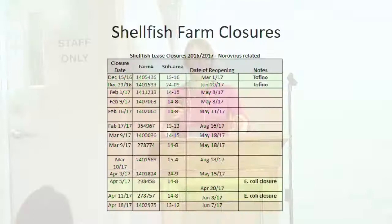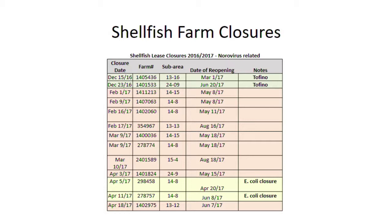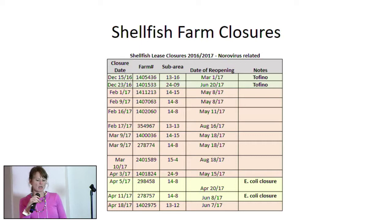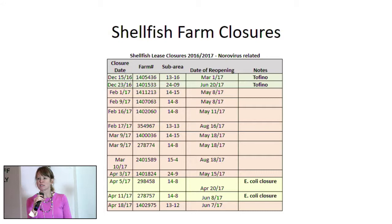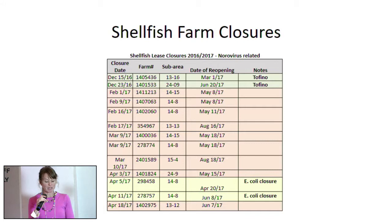Based on investigations at processors, on-site farm visits, and oyster testing, 13 shellfish farms were closed during the outbreak — two related to the Tofino outbreak and the remainder related to the second wave. Closures covered a large geographic area on the west and east coasts of Vancouver Island. There were no pre-existing guidelines for norovirus-related closures, so CFIA developed interim situational guidance for both closure and reopening of farms.